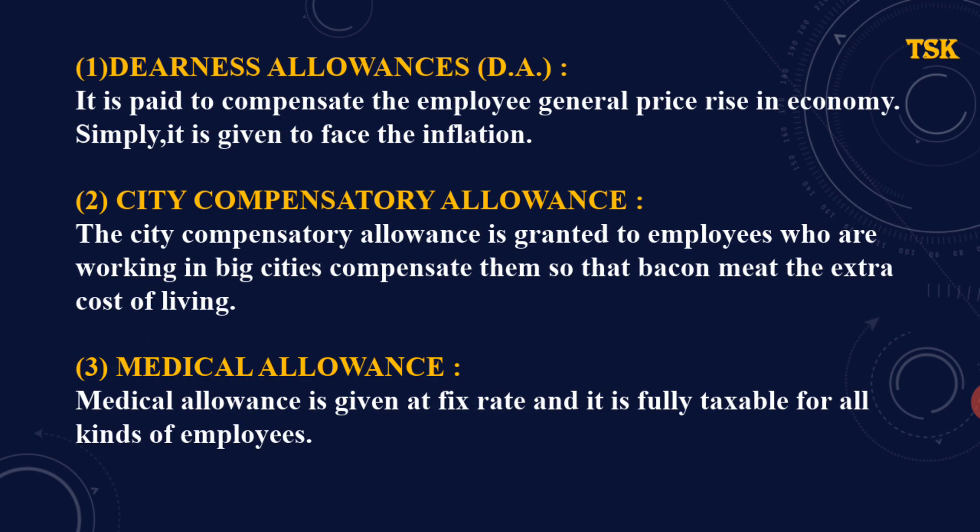Third is medical allowance. Medical allowance is given at a fixed rate and it is fully taxable for all kinds of employees. Medical allowance जो है वो एक fixed rate पर जाता है — suppose 800 per month या 600 per month — और यह fully taxable है दोनों types के employees के लिए, यानी government employees और non-government employees दोनों के लिए।